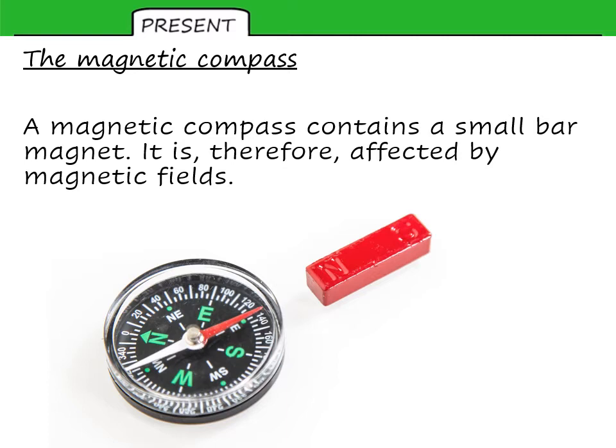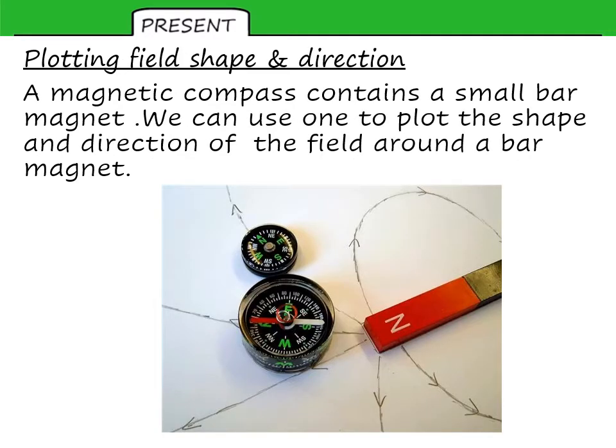Moving on to magnetic compasses now. A magnetic compass contains a small bar magnet. And as such, it is affected by magnetic fields. So when I place a bar magnet close to the compass, I can make the compass needle be attracted or repelled depending on which magnetic pole is placed close to it. Completely change the direction of the compass so that it no longer tracks the earth's magnetic fields. We may use magnetic compasses to plot the shape and direction of the field around a bar magnet, as shown in this diagram.